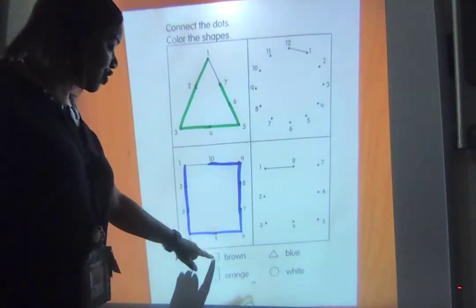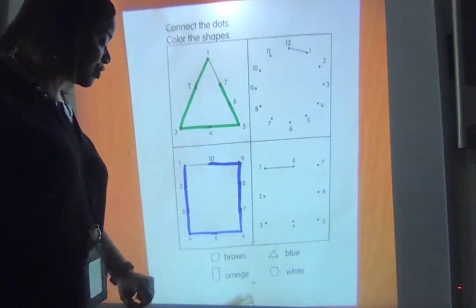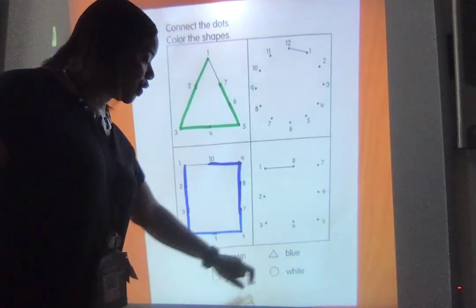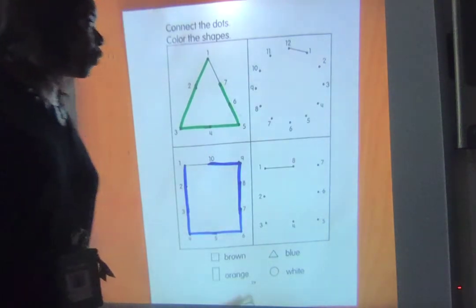And then when you finish, the square should be brown. Let's read our color words. Rectangle's orange, triangle's blue, and our circle will stay white.